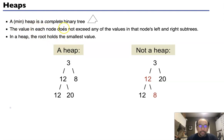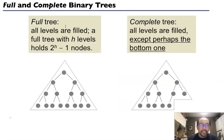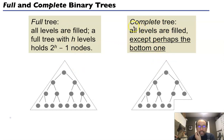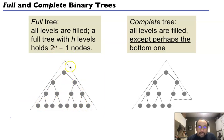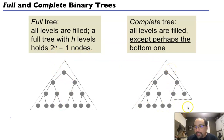A heap is a complete binary tree. A full tree is a tree that has all levels filled — this is a picture of a full tree of height h, where there are 2^h minus one nodes. A complete tree is not completely filled; maybe the last level has some missing nodes. So you can see these three nodes are missing over here — this is what's called a complete tree.